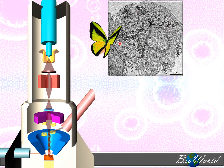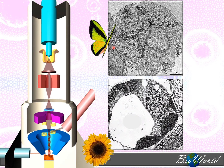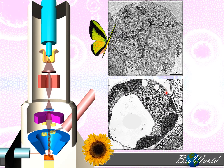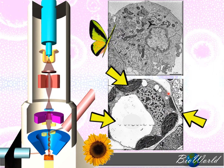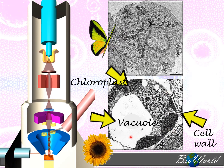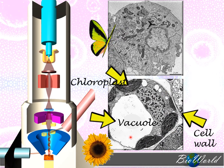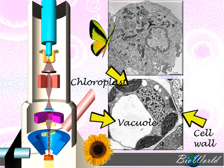When we look at a plant cell through the electron microscope, we can clearly see the cell wall, the chloroplast, as well as the vacuole. Next, we are going to focus on three cellular components found in cells.